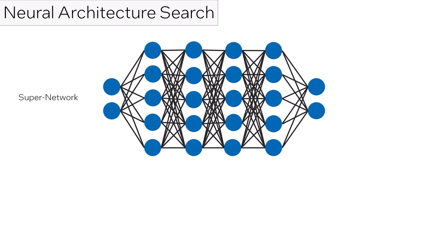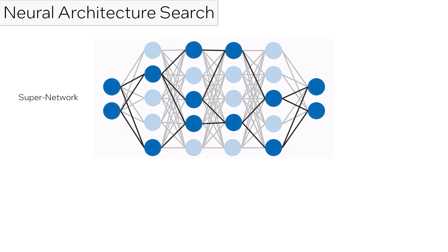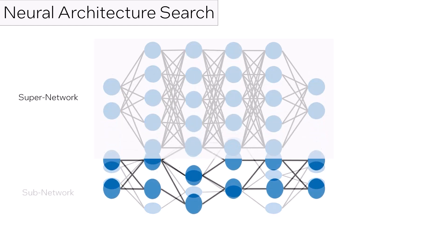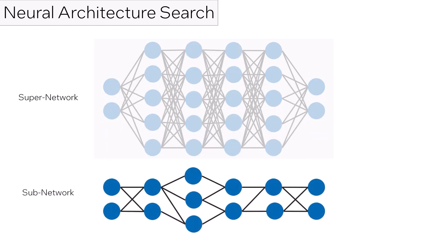Neural architecture search aims to automate the process of converging on a good student model, by first building a super net model from which multiple smaller architectures can be extracted. This requires extensive training, first of the large super net, then of the best resulting student architecture.